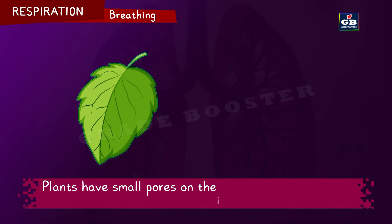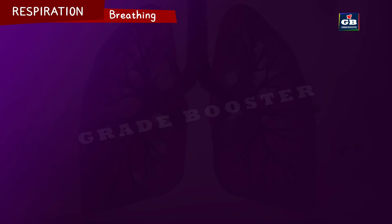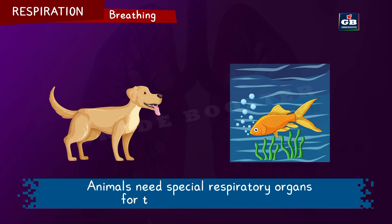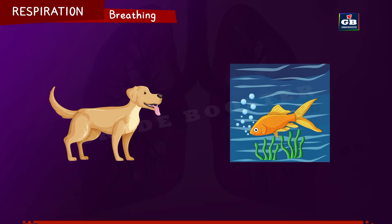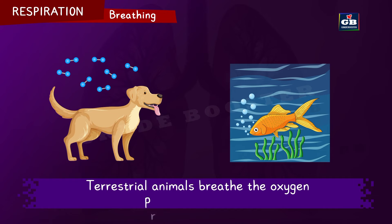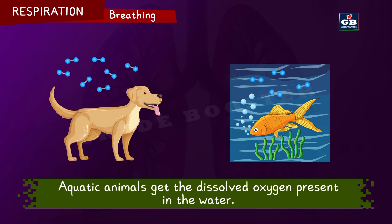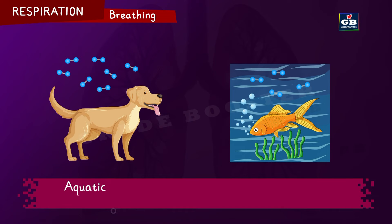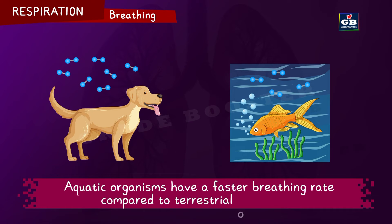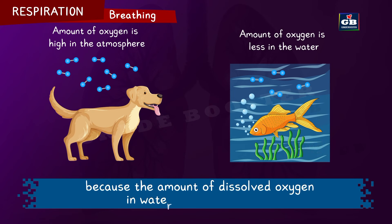Plants have small pores on their leaves called stomata for the exchange of gases. Animals need special respiratory organs for the exchange of gases. Animals live on both land and in water. Terrestrial animals breathe the oxygen present in the air, while aquatic animals get dissolved oxygen from the water. Aquatic organisms have a faster breathing rate compared to terrestrial organisms, because the amount of dissolved oxygen in water is relatively low.